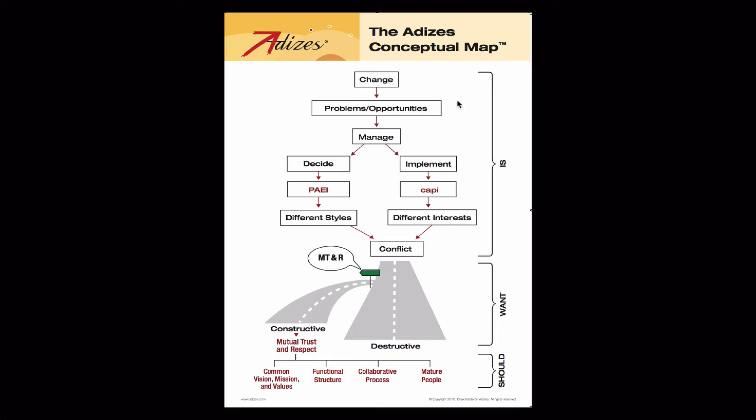You might ask: if there's a change loop, and whatever I do will create new problems that I'll have to manage, which will create new problems — so how do I win? How do I know that I am managing well? And the answer comes in the form of a joke.